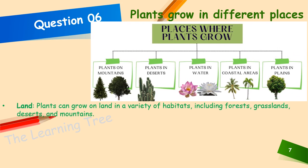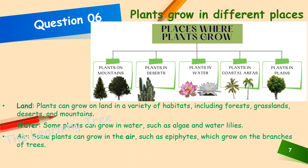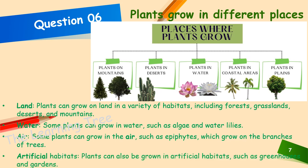Land: plants grow on land in a variety of habitats including forests, grasslands, deserts and mountains. Water: some plants can grow in water, such as algae and water lilies. Air: some plants can grow in the air, such as epiphytes which grow on the branches of trees. Plants can also be grown in artificial habitats such as greenhouses and gardens.